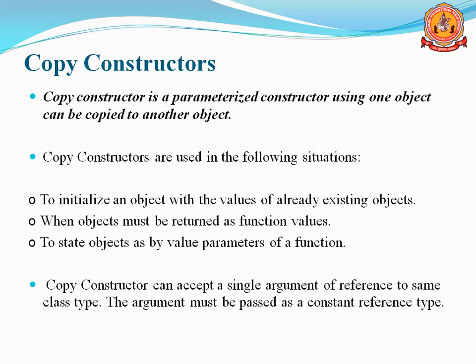Copy Constructors can be used in the following situations: to initialize an object whose data is already defined in another object; when an object must be returned from a function as a function value; and to pass an object as a pass-by-value parameter of a function.